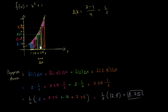In the next few videos, we're going to try to generalize this to situations where we have an arbitrary function and an arbitrary number of rectangles. We'll also look at rectangles where we define the height not by the left boundary, but by the right boundary or by the midpoint. Or maybe we don't use rectangles at all — maybe we might use things like trapezoids.